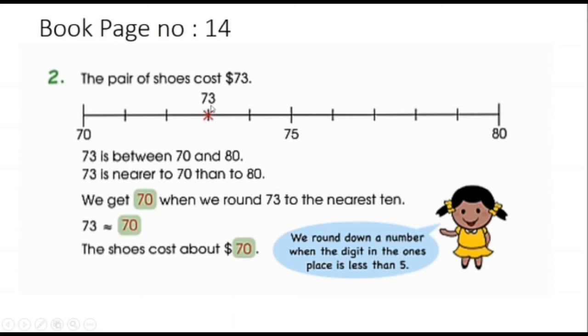At its ones place, three is given. So again, this three is smaller than five, so you would definitely round towards 70, because there is a gap of only three numbers between 70 and 73. So it is more nearer to 70 than to 80. That's why we are rounding it off to 70.